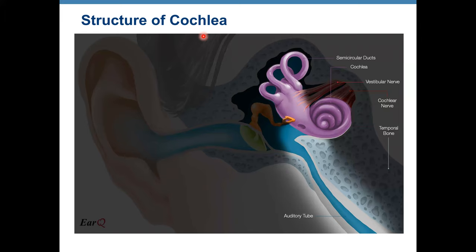Now, structure of the cochlea. The inner ear structure shown in purple includes the vestibule, semicircular canals, and cochlea. Please make sure you watch the video about anatomy of the inner ear before watching this physiology video.